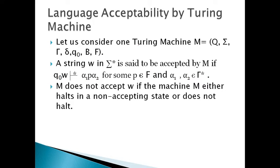Let us consider one Turing machine M = (Q, Sigma, Gamma, delta, Q-naught, B, F). A string W in Sigma-star is said to be accepted by M if for that W we get this configuration: Q-naught W moves in zero or more steps to configuration alpha1 P alpha2, where P belongs to the final states F, and alpha1 and alpha2 belong to star closure of Gamma.